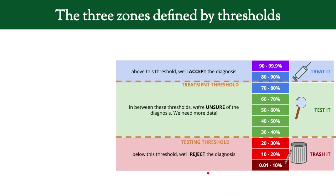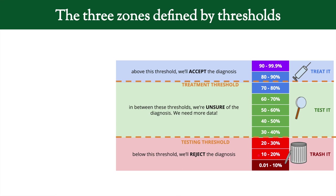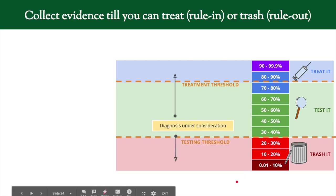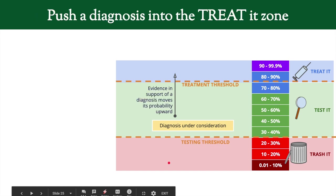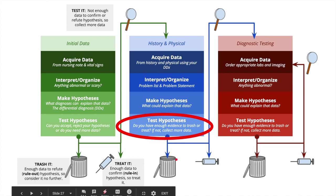In summary: we have uncertainty in medicine. We can never say with certainty that someone does or doesn't have a diagnosis — instead we have probabilities. Since we don't have certainty, we set thresholds: a treatment threshold above which we accept the diagnosis and start treatment, and a testing threshold below which we reject it. Anything in between means we're unsure and need to collect more data. We collect evidence until we can push the probability above the treatment threshold or below the testing threshold. Evidence supporting a diagnosis moves its probability upward; evidence against it moves the probability downward.